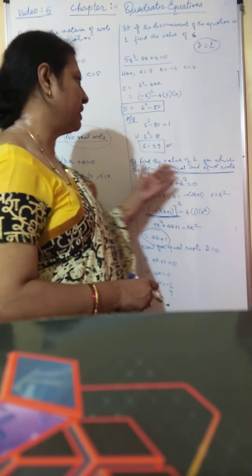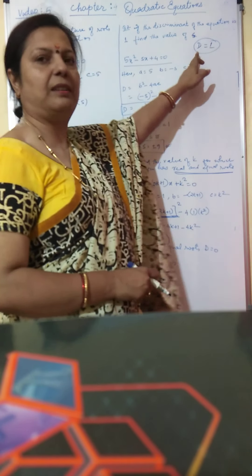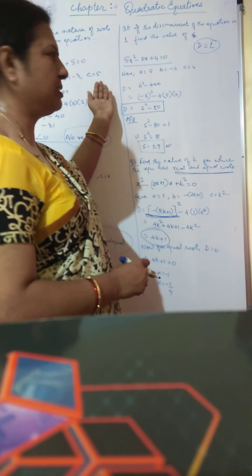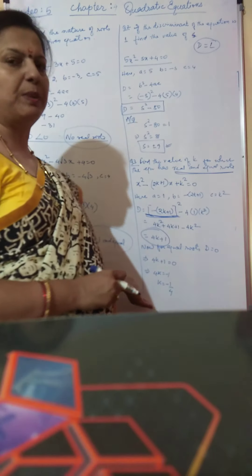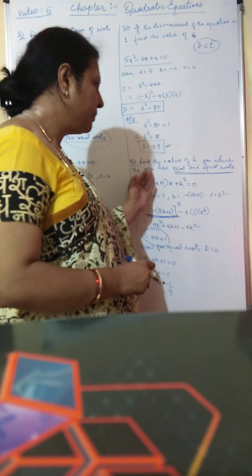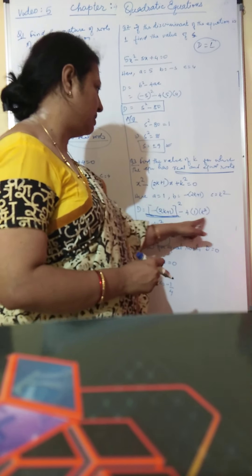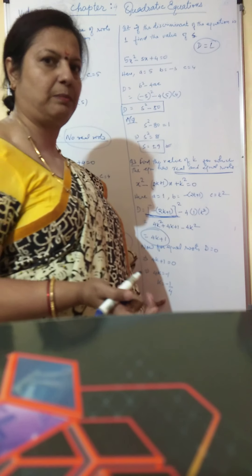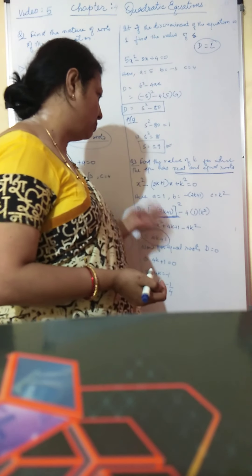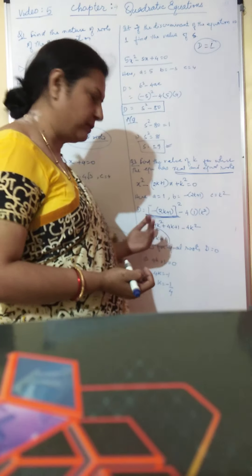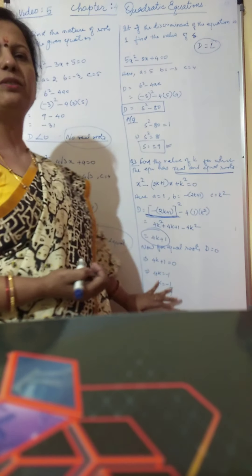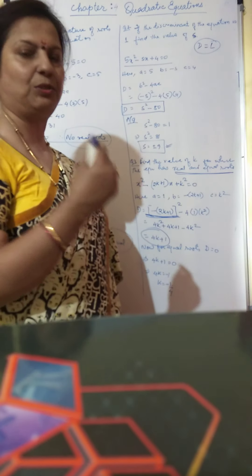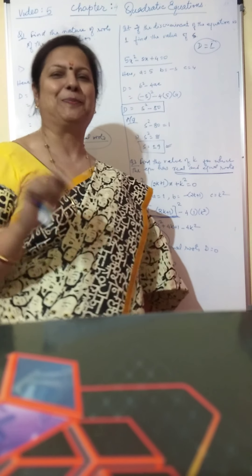This is how we find the value of the unknown when we are given the nature of roots. This question may come for 3 marks: identifying values of a, b, c gives 1 mark; substituting and getting the value of D gives another mark; and finding the value of k gives the final mark. The next part of the topic is word problems, which we will discuss in class if time does not permit in the videos. Thank you.